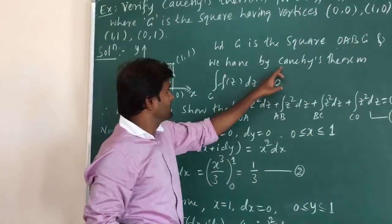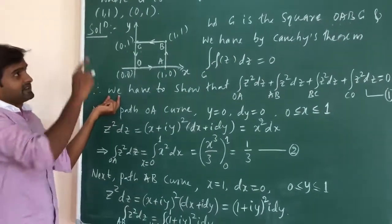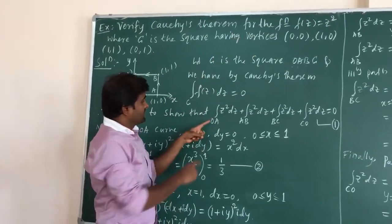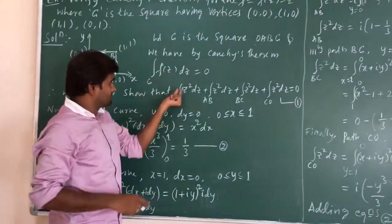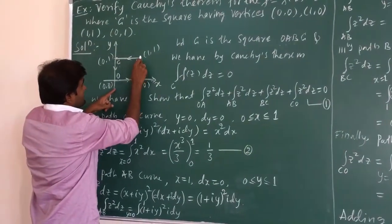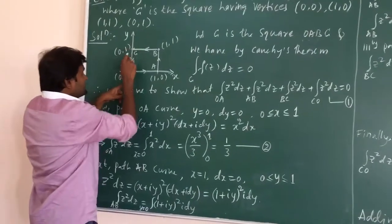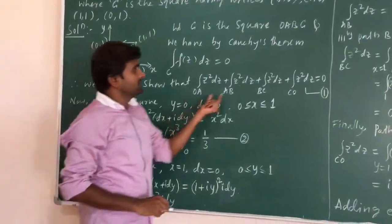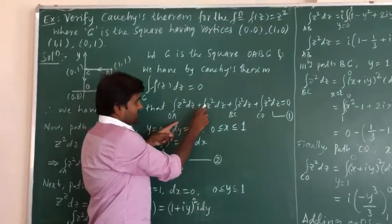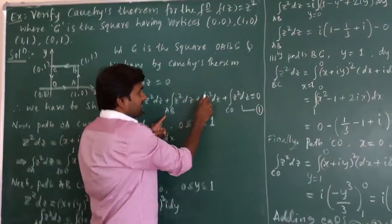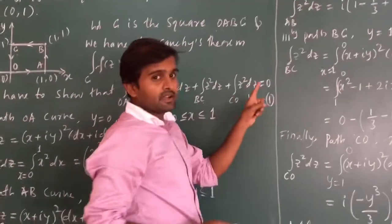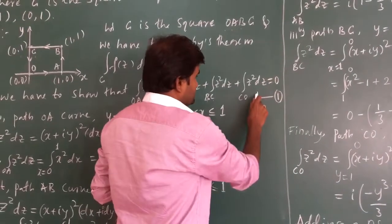We need to verify this integral. The integrand function is z². We have four different paths. So the integral equals: ∫(OA) z² dz + ∫(AB) z² dz + ∫(BC) z² dz + ∫(CO) z² dz = 0. I am calling this equation number 1. After adding all these expressions it should equal 0.